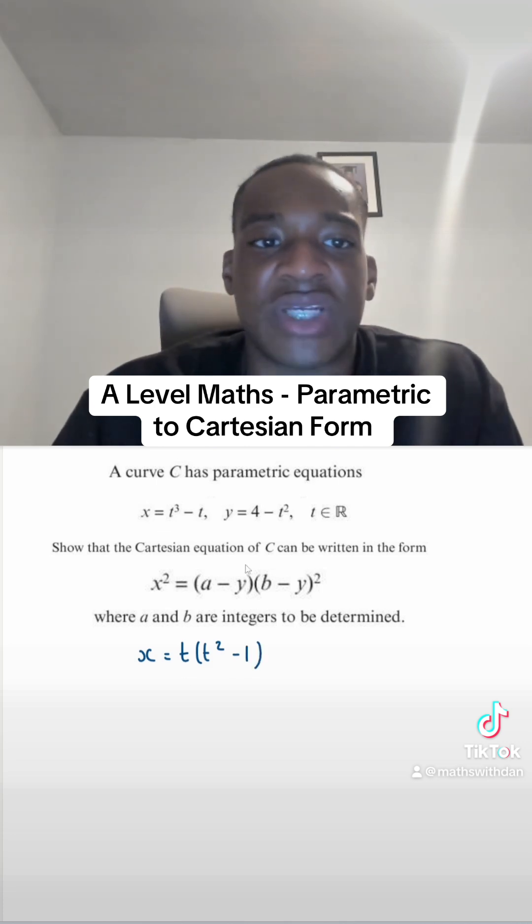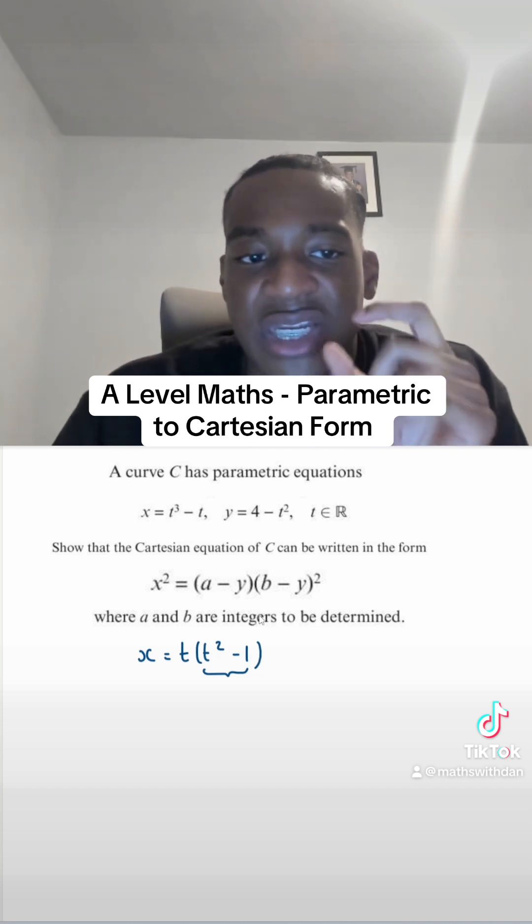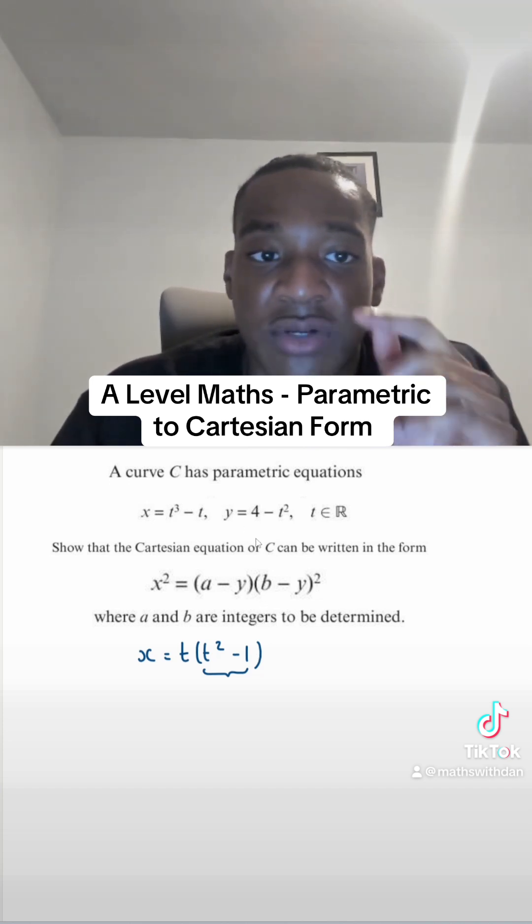The reason I'm doing that is because I can see a t squared in the equation for y. So I've got t squared minus 1 here. What I want to do is figure out what t squared minus 1 is in terms of y.